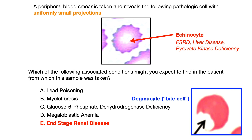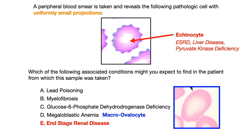Choice D, megaloblastic anemia, is associated with a macro ovalocyte. Macro ovalocytes are going to be associated with megaloblastic anemia — you can see in the image the enlarged cell appearance. You also want to associate megaloblastic anemia with hypersegmented PMNs. If you knew that association, which is more commonly tested and more commonly known than the echinocyte, you could have eliminated choice D.